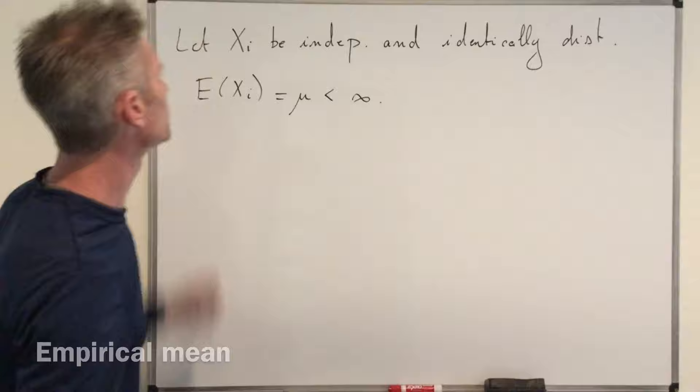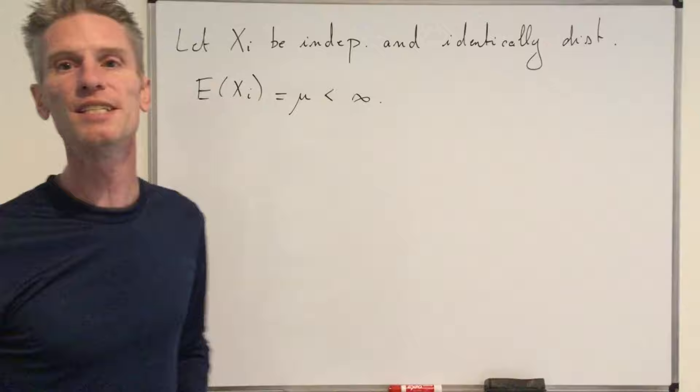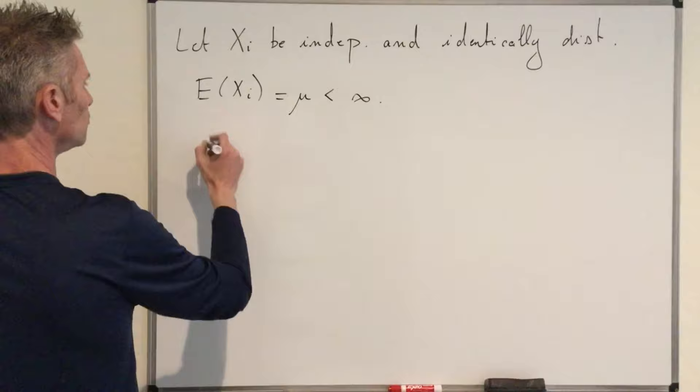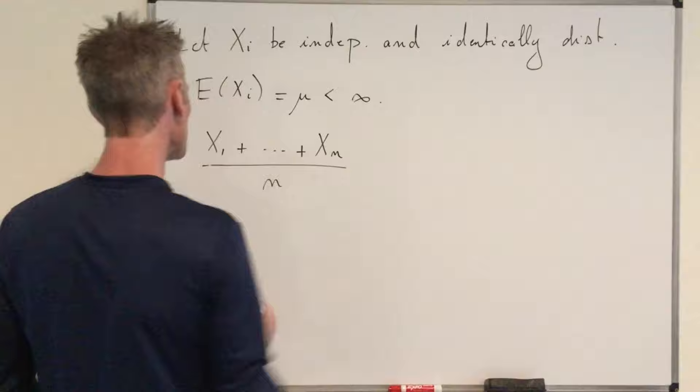Let's assume, for instance, that you can observe the first n of those random variables. You are going to add them up, divide by n, and that gives you the empirical mean — some kind of average that you can observe. That's going to be the quantity X1 plus X2 and so on up to Xn.